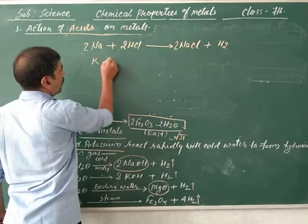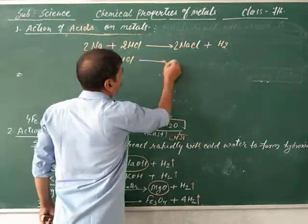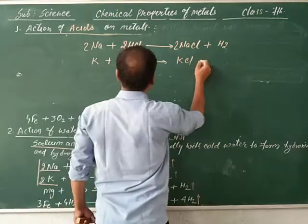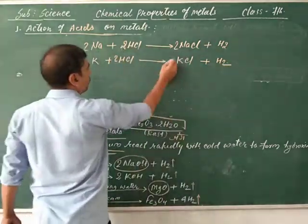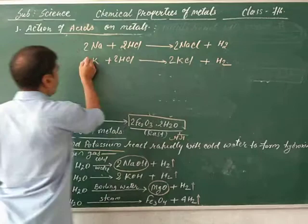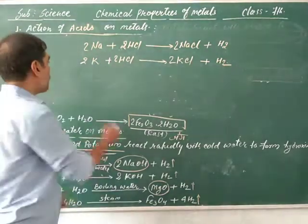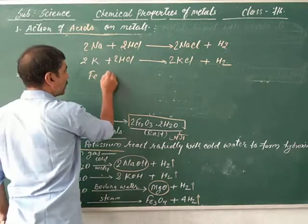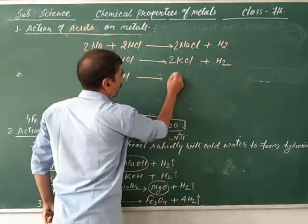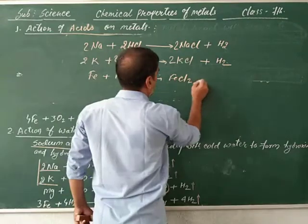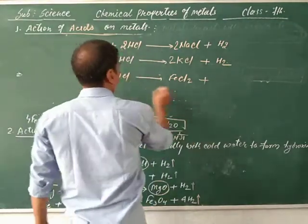This is the reaction of metals with hydrochloric acid. Iron also reacts with hydrochloric acid to form FeCl2 plus hydrogen gas.